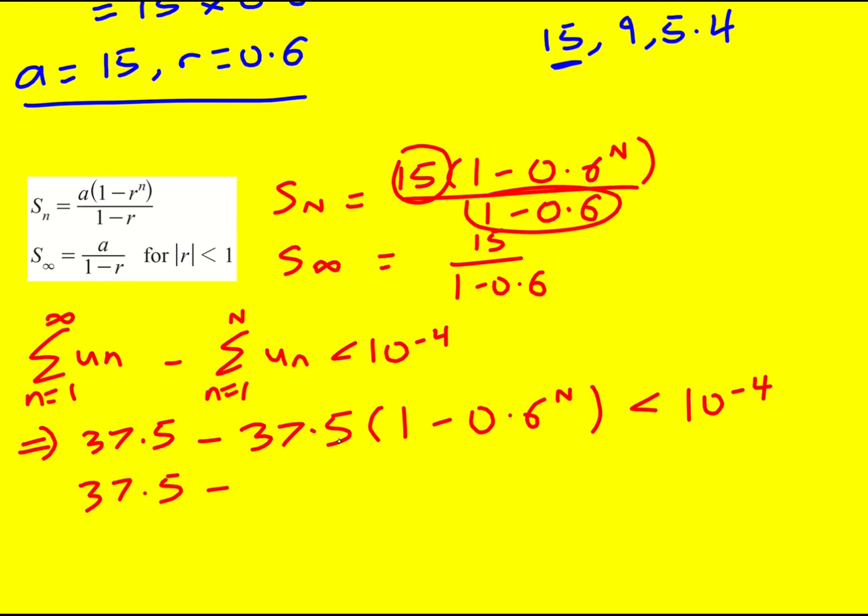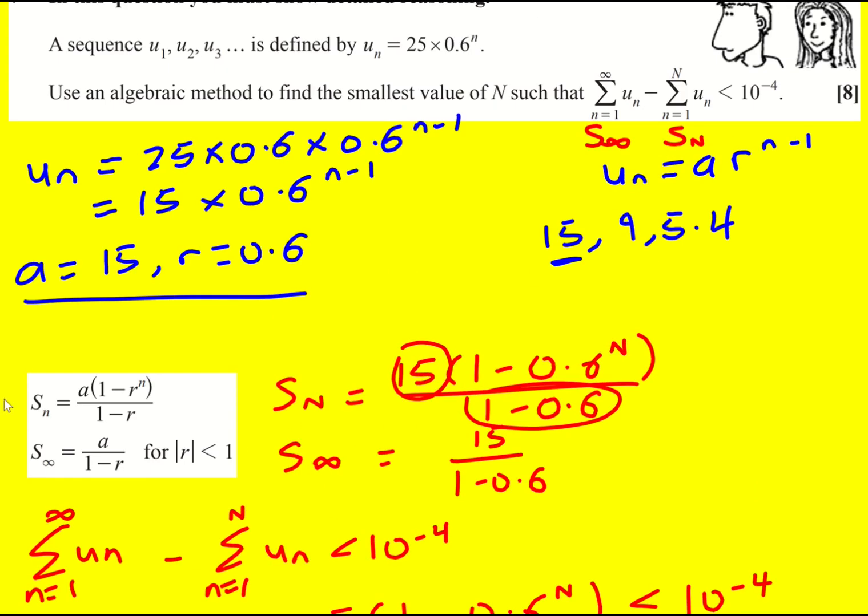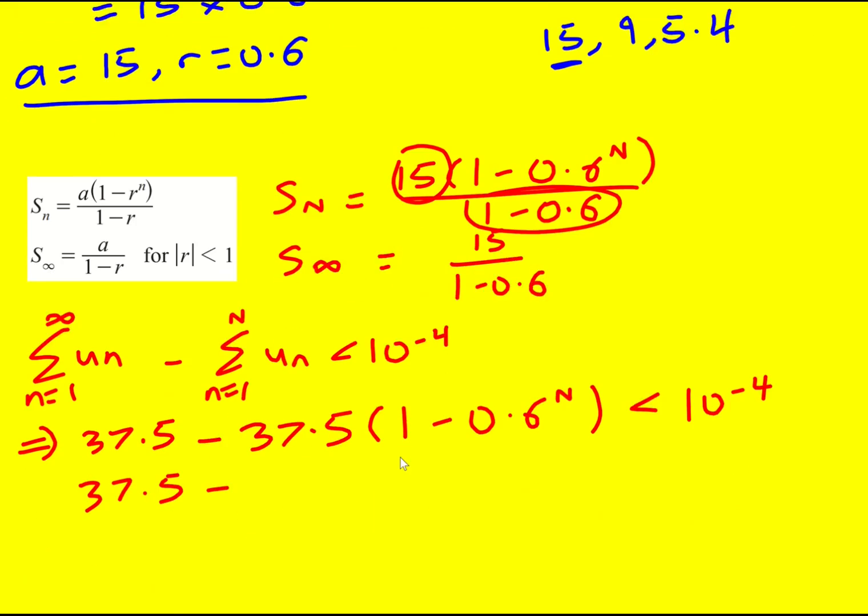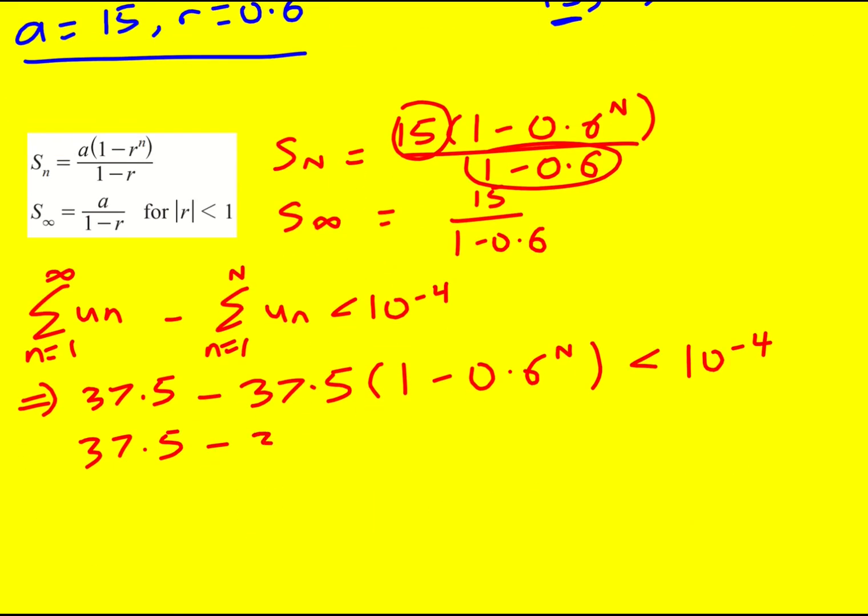Okay, we've got ourselves our inequality in terms of capital n. Remember we're asked for the smallest value of n. There's going to be lots of values of n that exist but we're looking for the smallest. So expand this bracket. Okay, so these cancel out.